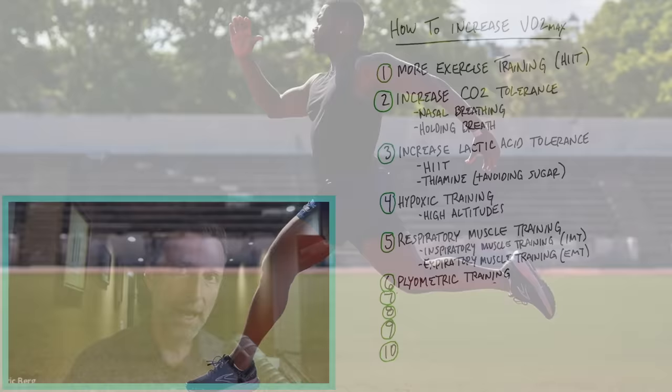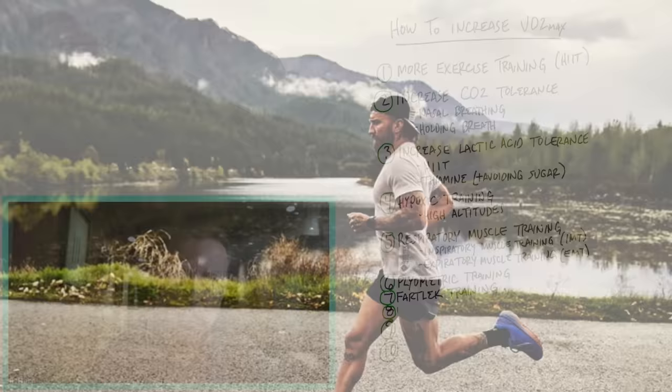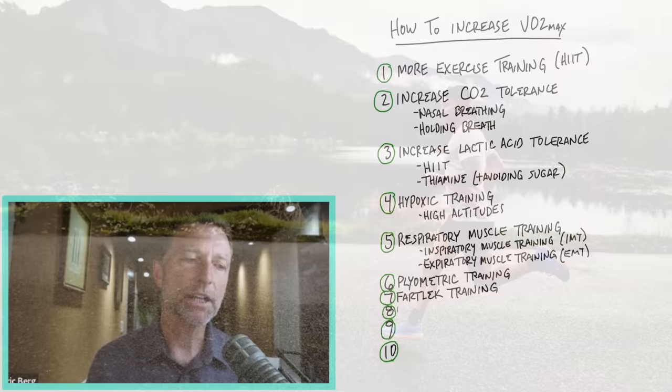Then you also have something called fartlek training, which involves while you're running, you're speeding up your pace or you're slowing down your pace throughout this exercise. So it's kind of like interval training, but you're doing it sporadically. You're just increasing and decreasing the intensity of that workout for a run.